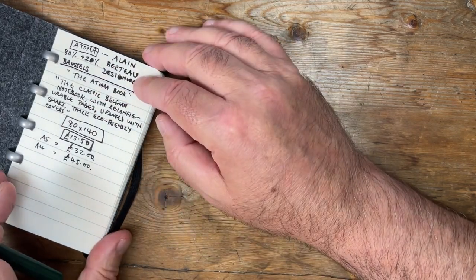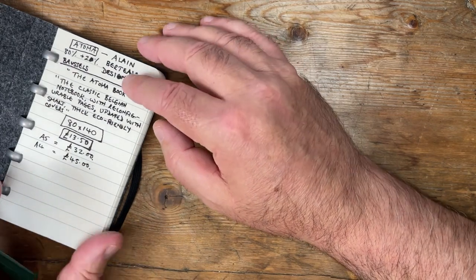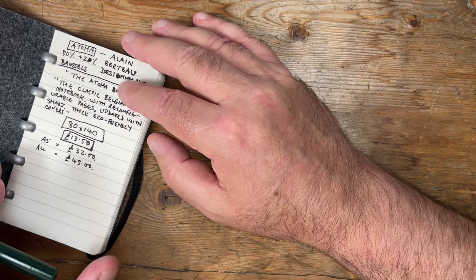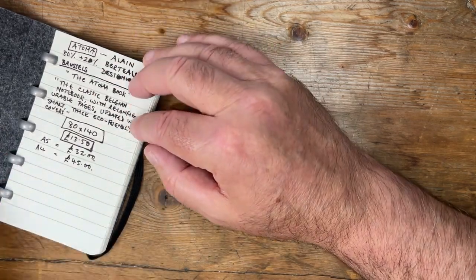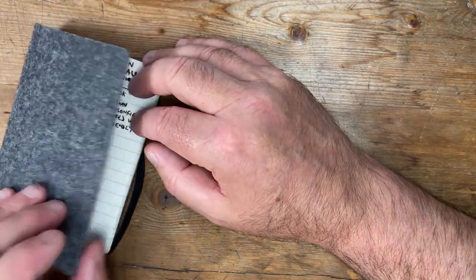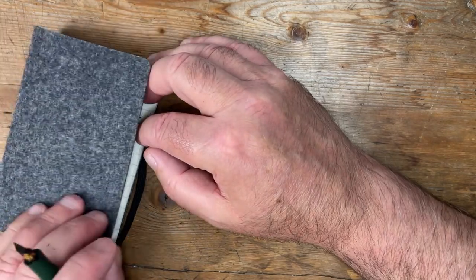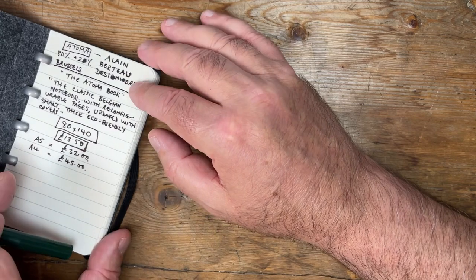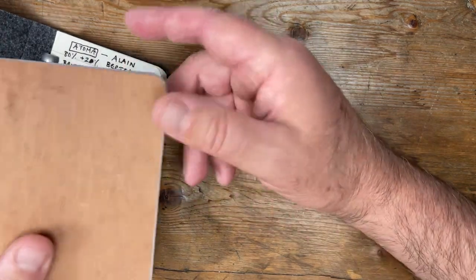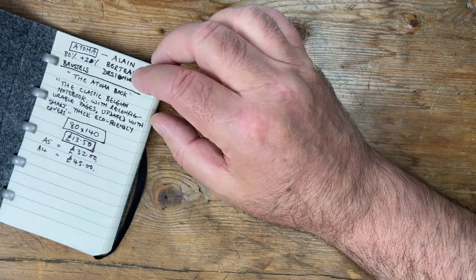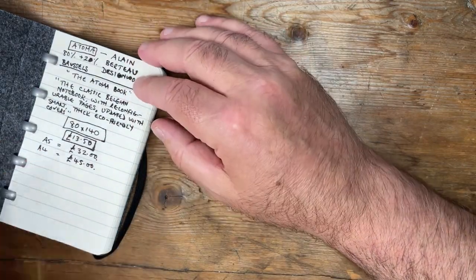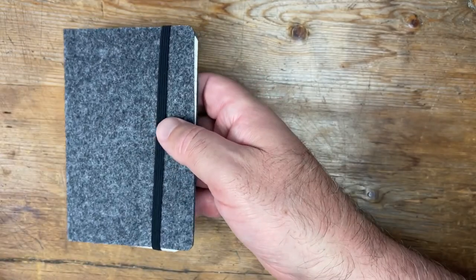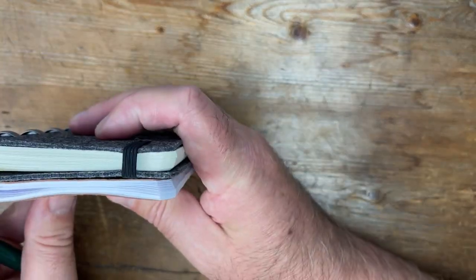So £13.50, this is actually available in Nominal A5 and Nominal A4 as well. Nominal A5 is going to cost you £32, and Nominal A4 will cost you £40, £45. Okay, so I don't know whether that represents good value to you, but I'm not interested in the larger sizes, but I am interested in this pocket size, 80 by 140.